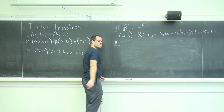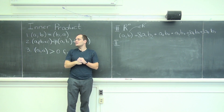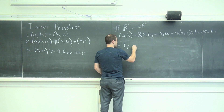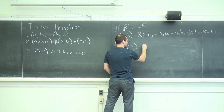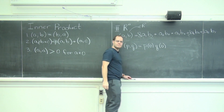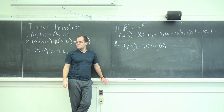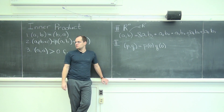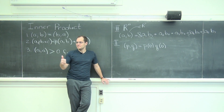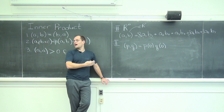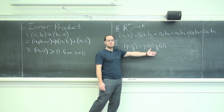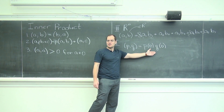Let's step back to polynomials and give you a couple of near inner product examples. For example, P dotted with Q equals P of 0 times Q of 0. Remember these are polynomials — I can evaluate them. So instead of an integral, I can evaluate them; that gives me a number. This is a rule that takes two polynomials and produces a number, so it's a candidate for an inner product.